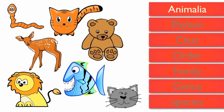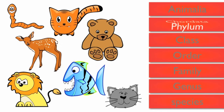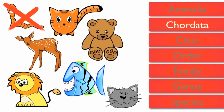The phylum that the lion fits into is called Chordata. This is a group that includes everything with a backbone. The worm would be eliminated from our group because of its lack of a backbone.